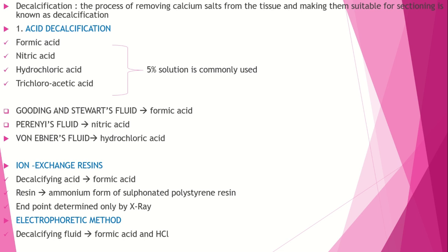Another method is ion exchange resin, using formic acid with ammonium form of sulfonated polystyrene resin. During decalcification we must determine an end point — the point at which tissue must be removed from the decalcifying fluid. For ion exchange resin, the x-ray method is used to determine the end point. One method is the electrophoretic method.